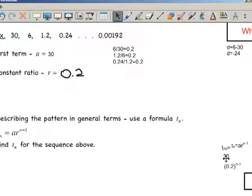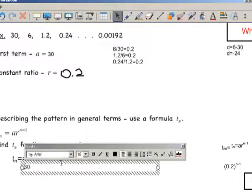What happens if we want to get a general formula for the precise sequence above? We start off with the general formula for all geometric sequences, and then we personalize it for our sequence. Our sequence had a first term of 30. So Tn for my sequence equals 30.